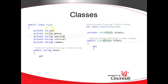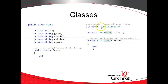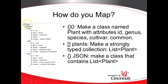Notice this class called Plant — take a look at these attributes: ID, genus, species, cultivar, and common. You can see how they marry up with the JSON based on naming convention. Now take a look at this class called PlantCollection — it has a strongly typed list of type Plant, called plants, with a public accessor also called Plants with a capital P. The Plant class here is the same type contained in PlantCollection, so we have: Plant, list of Plants, PlantCollection.